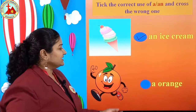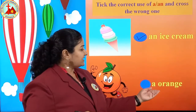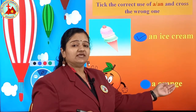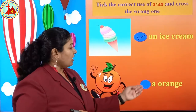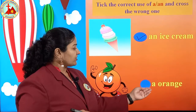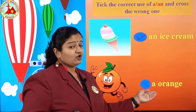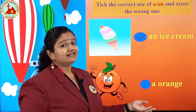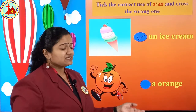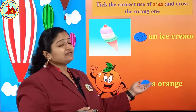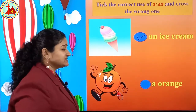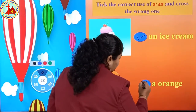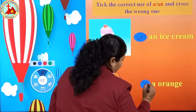Next one is orange. O, R, A, N, G, E — orange. Before orange, A is written. O is a vowel, so before vowel AN should come. But A is written — this sentence is wrong. Put a cross sign.